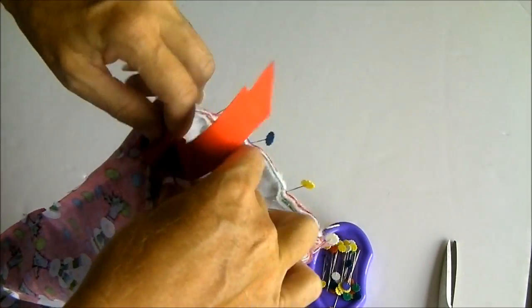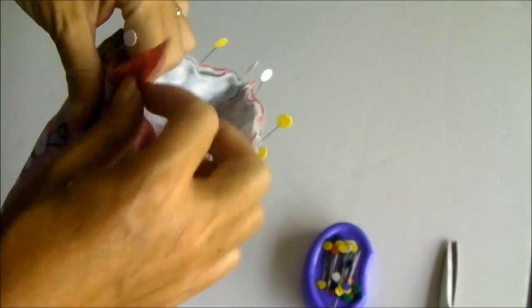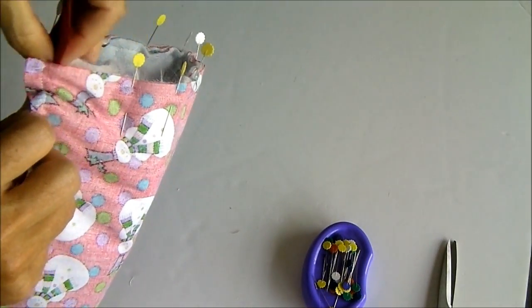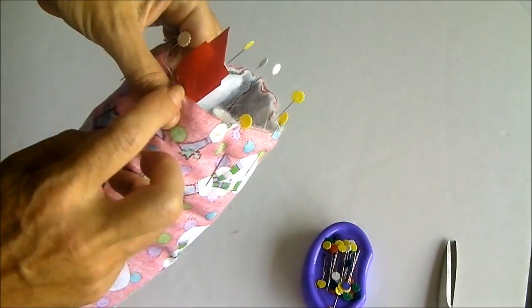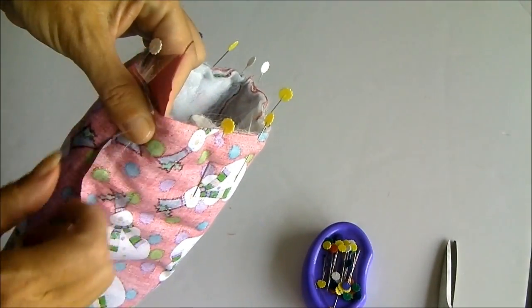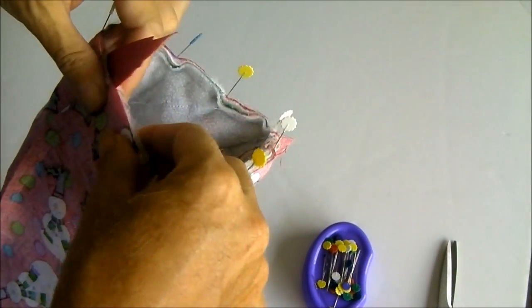I'm going to pop that down inside there at the back center seam, make sure it's straight and then I'll just pop my pins back in and that as we sew around that will catch the ribbon in there. You can leave a little bit hanging out so you can see where your ribbon is and then we'll sew.